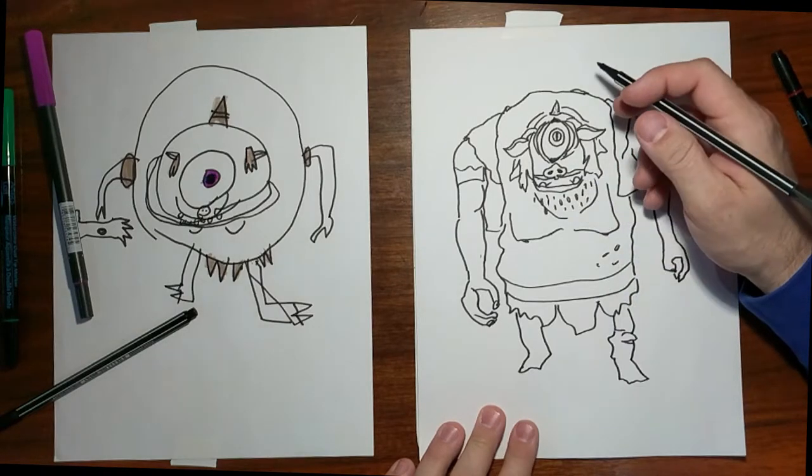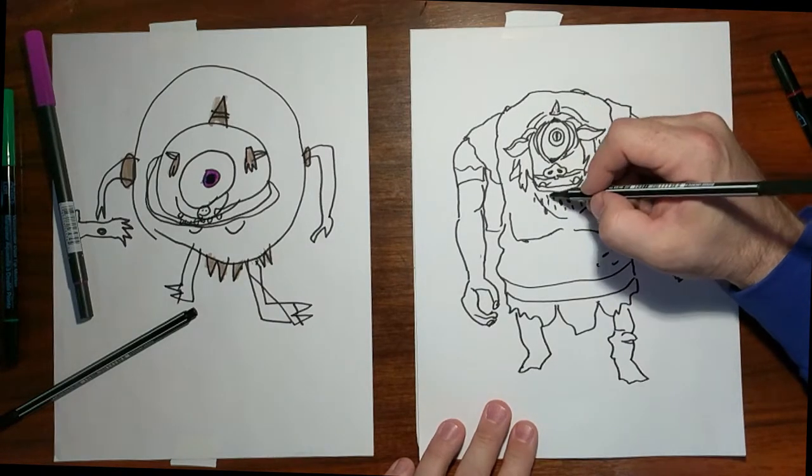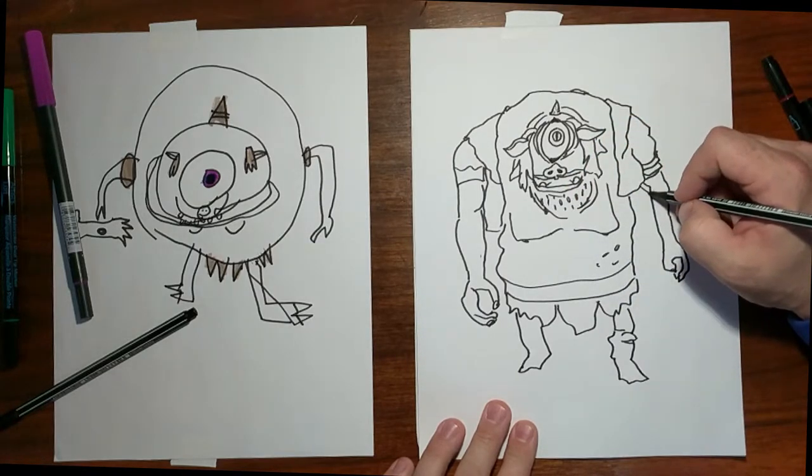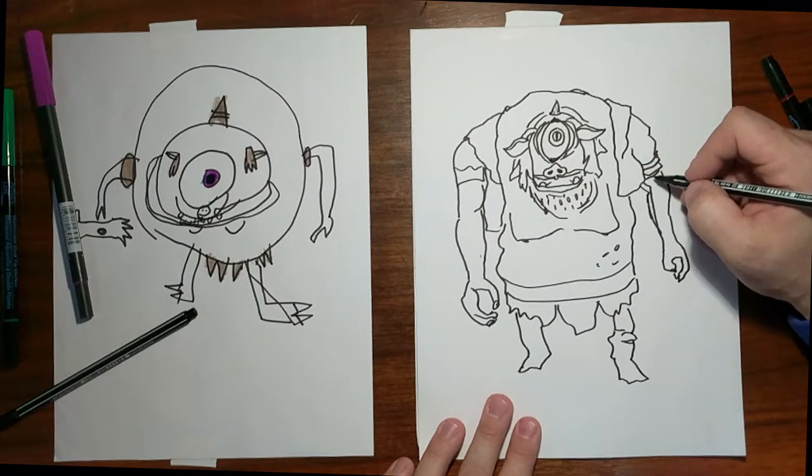Get kind of the necklace going. And. Yeah. Got kind of his chin here. Little bit of recessed chin.